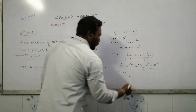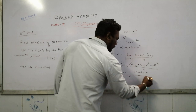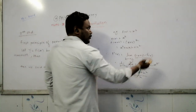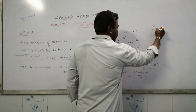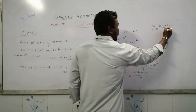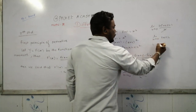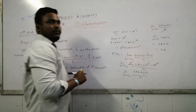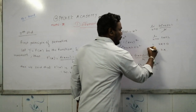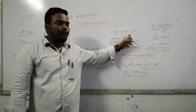Take h as common in the numerator: we get the limit as h tends to 0 of h times (2x plus h) upon h. The h cancels, so we get the limit as h tends to 0 of (2x plus h). Putting h equal to 0: 2x plus 0 equals 2x. So the derivative of x squared is 2x. By the first principle, we get the derivative of each and every function.